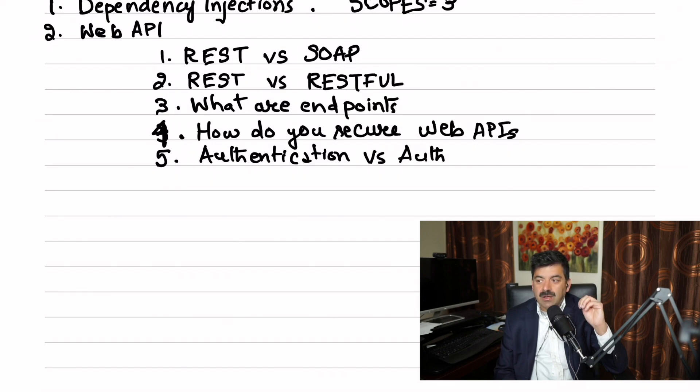How do you handle errors exception in Web API? The interviewer is looking at how you handle globally. So generally, you can set up a controller, global controller, which can handle all the errors exceptions.